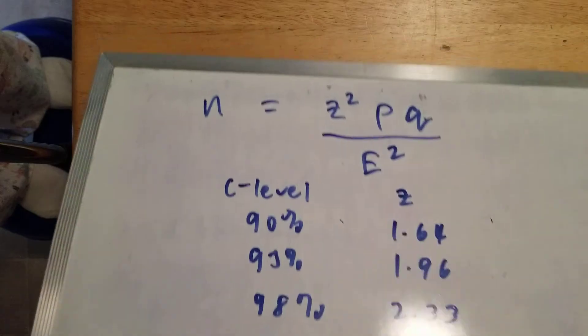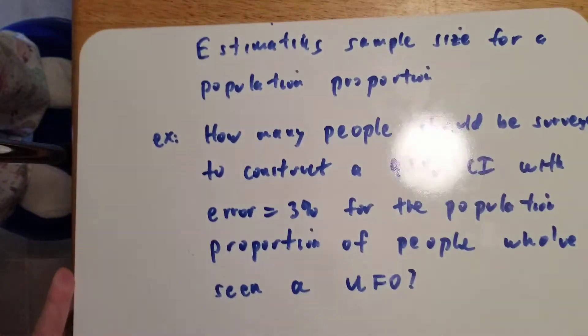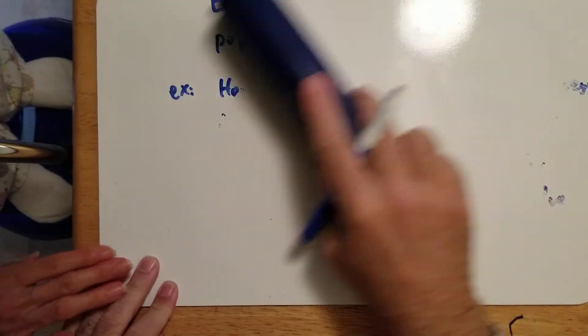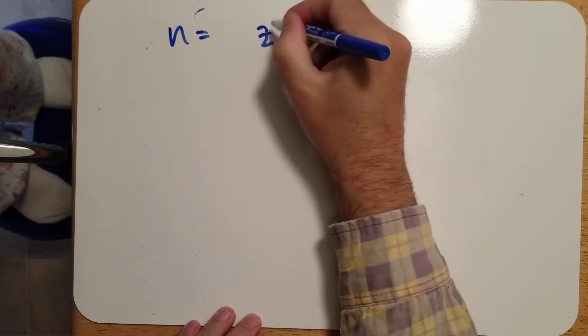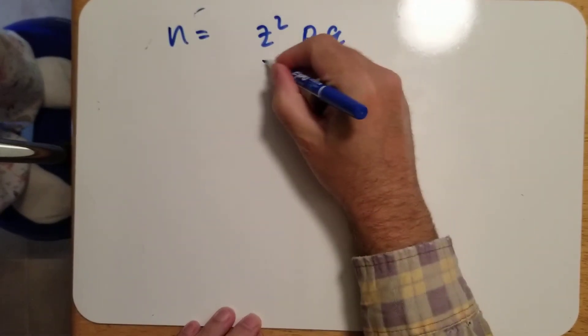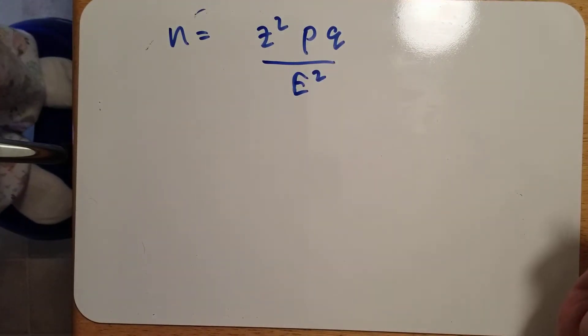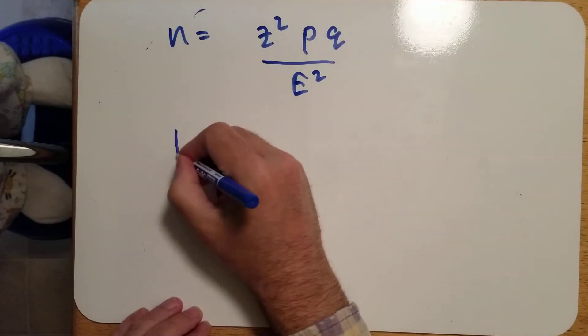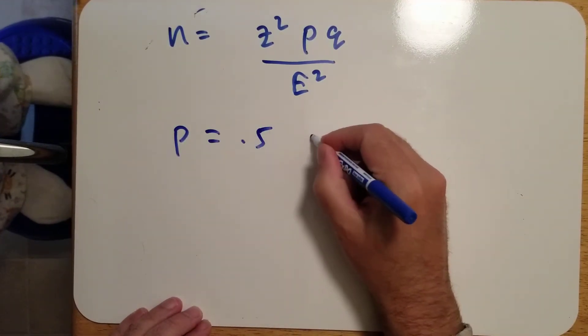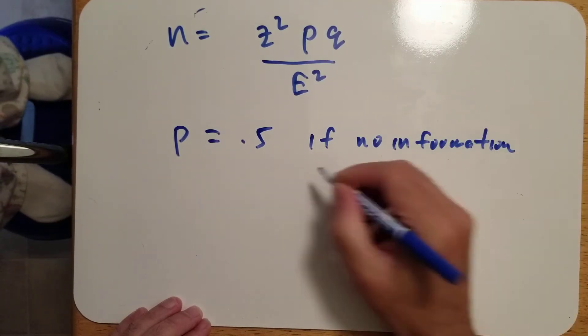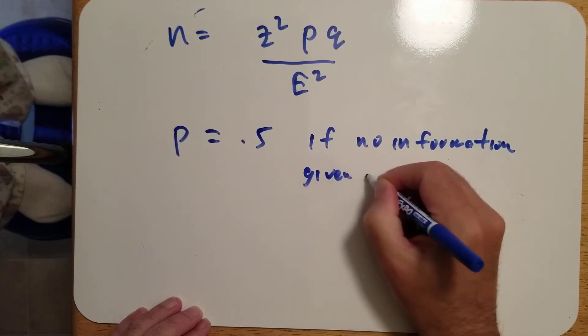N equals Z squared PQ over E squared. The P and Q depend on what information is given in the question. P equals 0.5 if no information is given in the question.